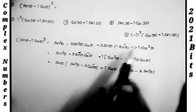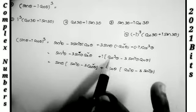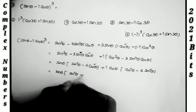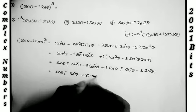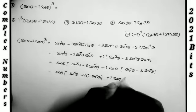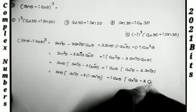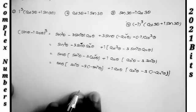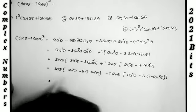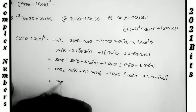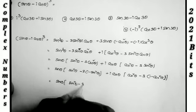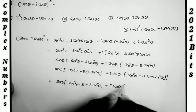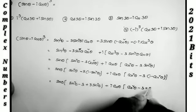Now I separate the real part and imaginary part by taking i common. I take sin θ common and cos θ common. Substituting cos²θ = 1 − sin²θ and sin²θ = 1 − cos²θ as needed. Since all options are in terms of cos 3θ and sin 3θ, I reshape the terms accordingly.